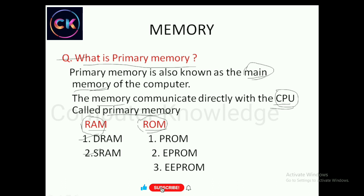ROM — Read Only Memory — stores data even when the power supply is off. The types of ROM are: first, PROM (Programmable Read Only Memory); second, EPROM (Erasable Programmable Read Only Memory); third, EEPROM (Electronically Erasable Programmable Read Only Memory).